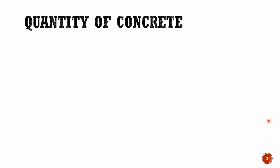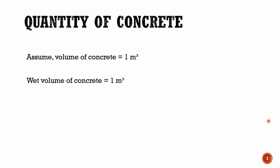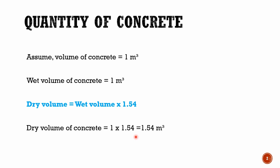Let's assume the volume of concrete as 1 cubic meter. Hence, the volume of wet concrete equals to 1 cubic meter. We all knew that to get the dry volume of concrete, we need to multiply wet volume with dry factor. Therefore, dry volume of concrete equals to wet volume multiplied by 1.54, where 1.54 is the dry factor, also known as the multiplication factor of concrete. So dry volume equals to 1 multiplied by 1.54, which equals 1.54. Here, 1 is the wet volume of concrete.